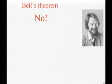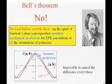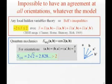This is Bell's theorem. Bell's theorem is no. There is no way, no way the red curve can come on the blue curve. In other words, Bell's theorem tells you that no local hidden variable theory in the spirit of Einstein's ideas can reproduce correlation at all the orientation of the polarizers. It's impossible to cancel the difference everywhere between the two curves.